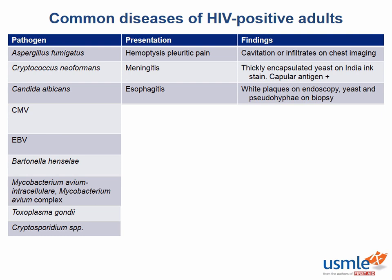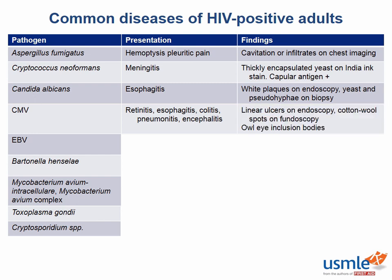Cytomegalovirus, or CMV, is one of the worst pathogens for patients with AIDS. It can end up all over the place, causing retinitis, esophagitis, colitis, pneumonitis, and encephalitis. Classic findings include linear ulcers in the esophagus on endoscopy, as well as cotton wool spots on fundoscopy looking in the eye. The classic finding on biopsy includes owl eye inclusion bodies.